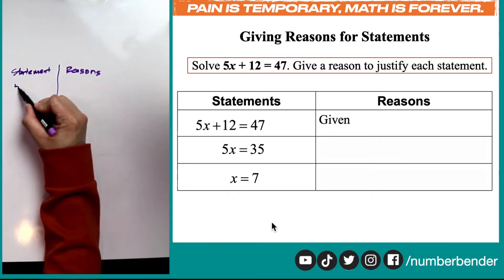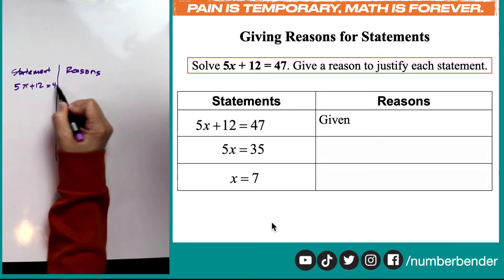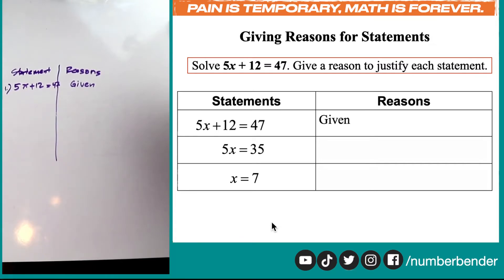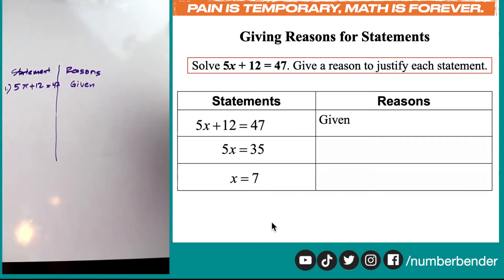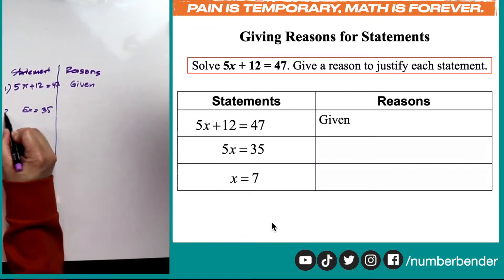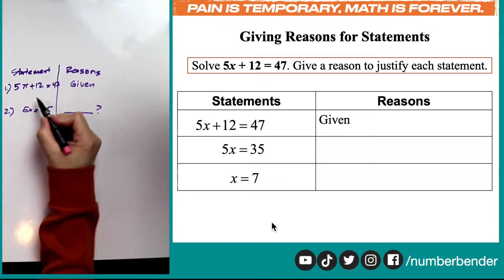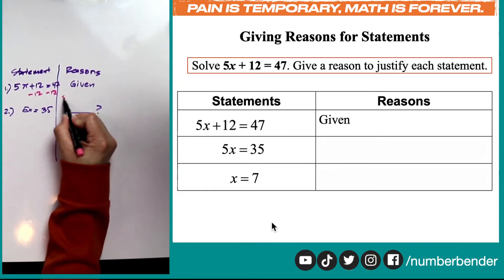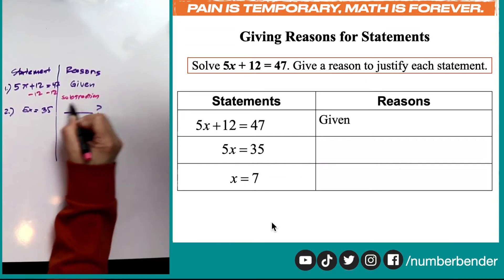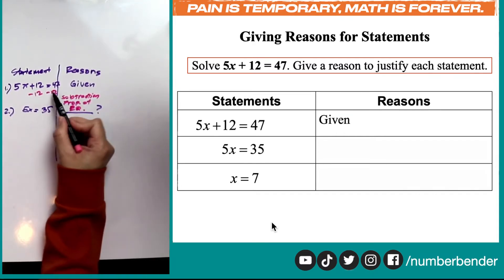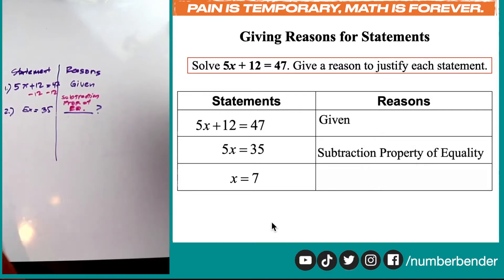For the first step, we have 5x plus 12 is equal to 47. This first line is always the easiest step in writing a two-column proof because all you need to do is establish your given problem. For line 2, we have 5x is equal to 35. We got there by subtracting 12 on both sides, so we use the subtraction property of equality as our reason for line 2.